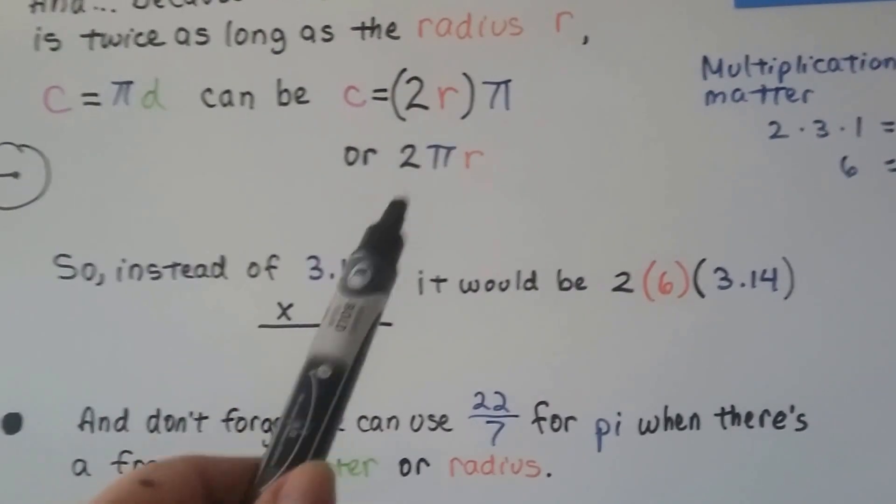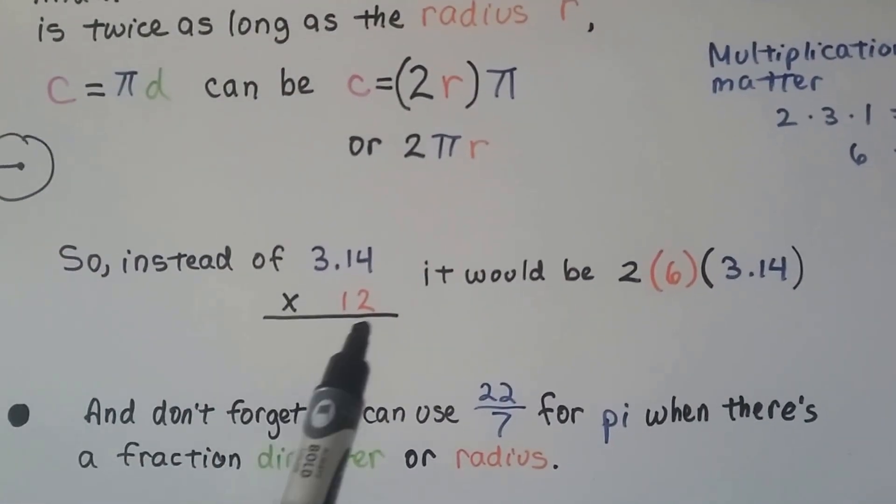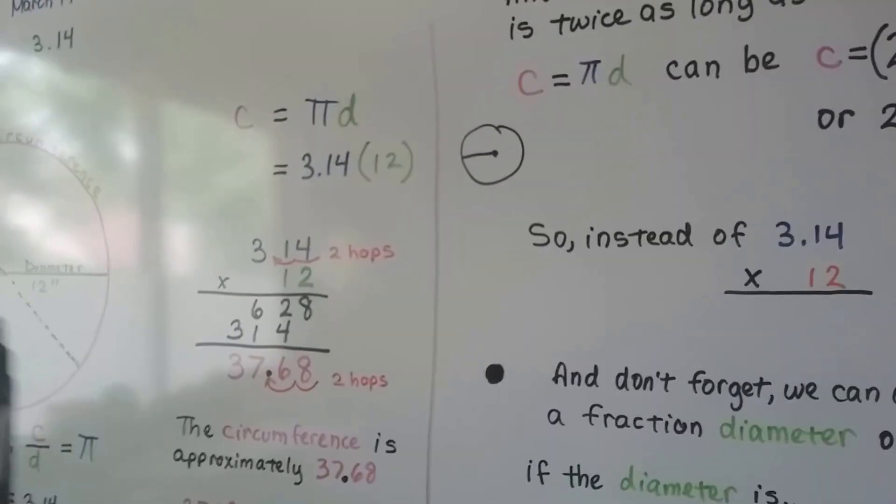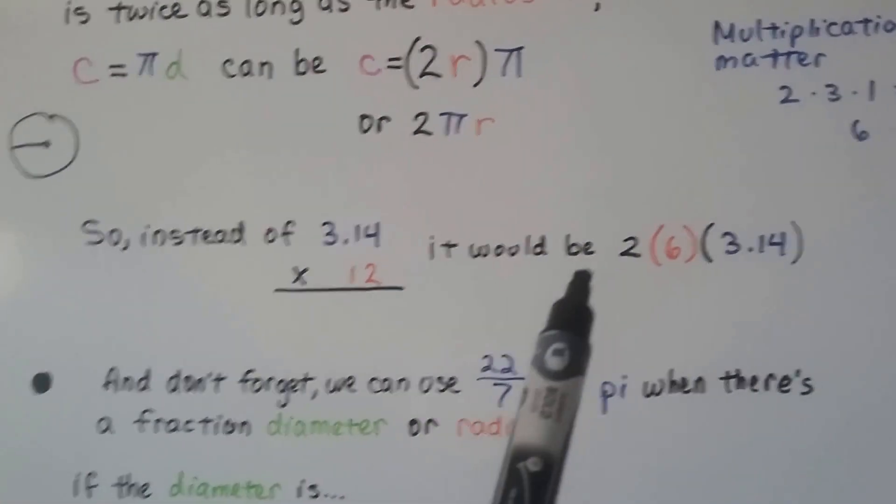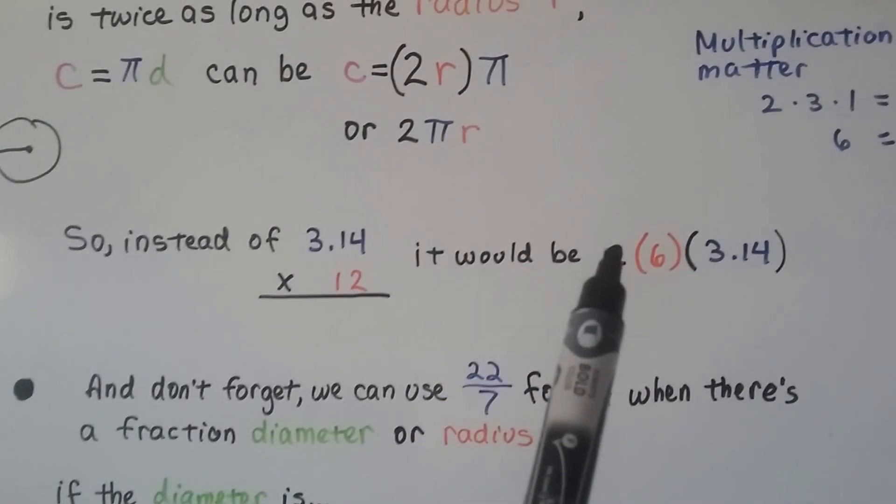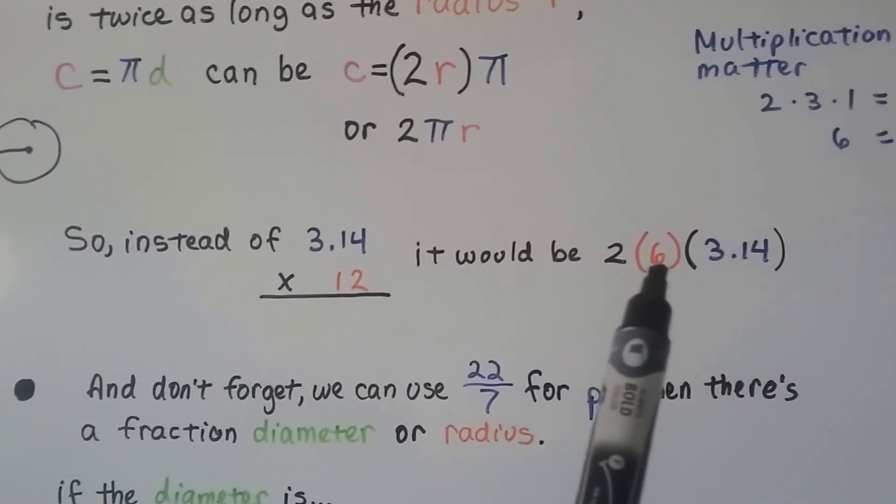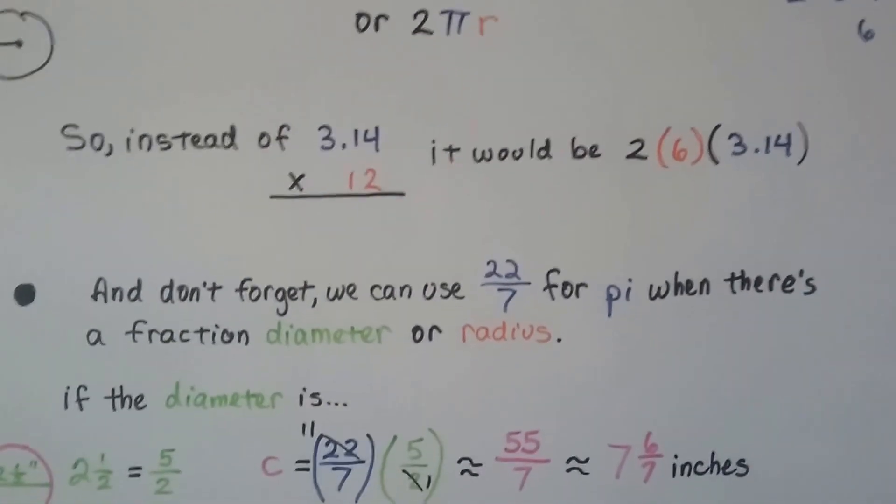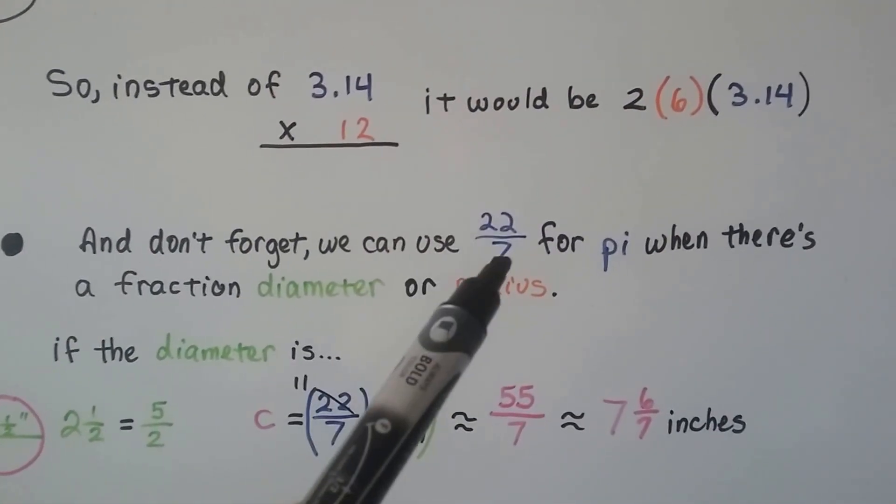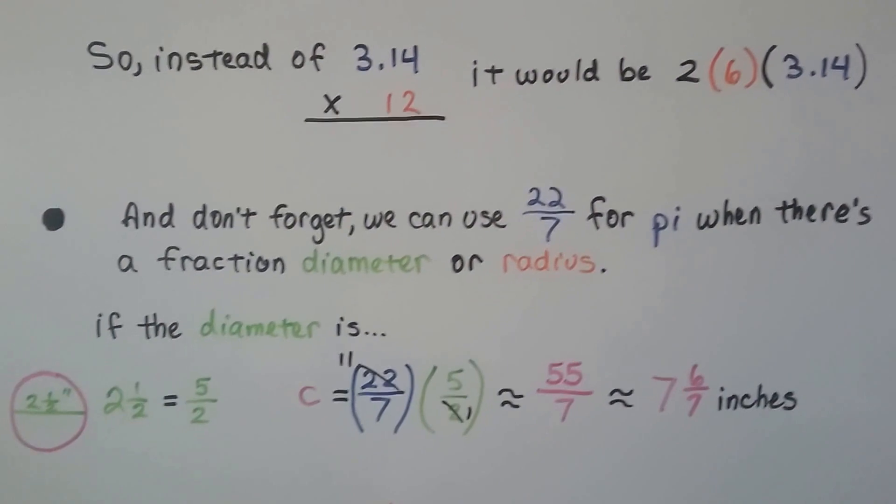So these are both equivalent. So instead of 3.14 times 12, like we did in this problem, multiplying it by the diameter, we would just do two times the radii, the radius. That's two times six. It's still 12. It would give us the same answer.